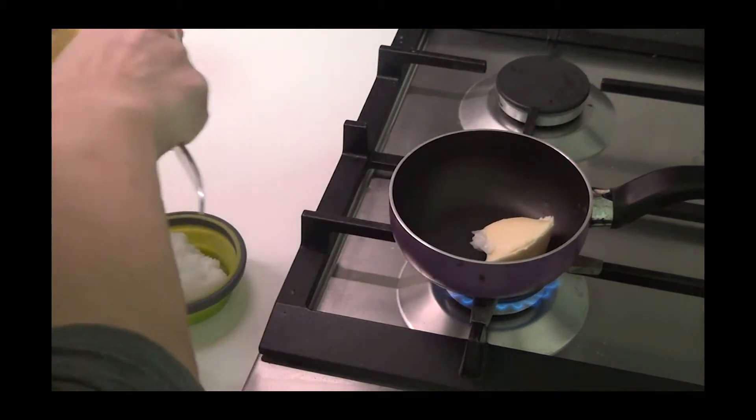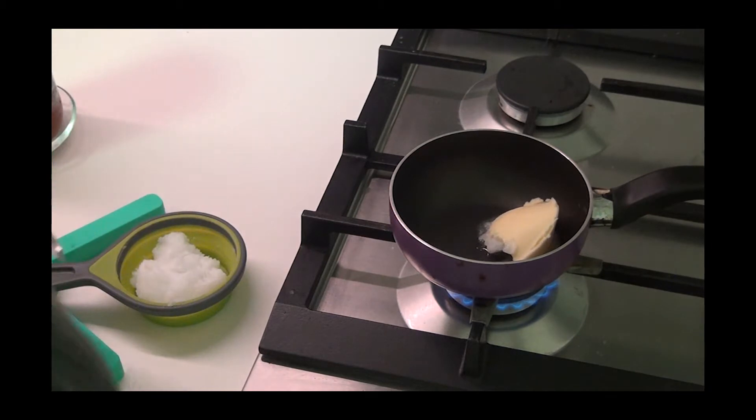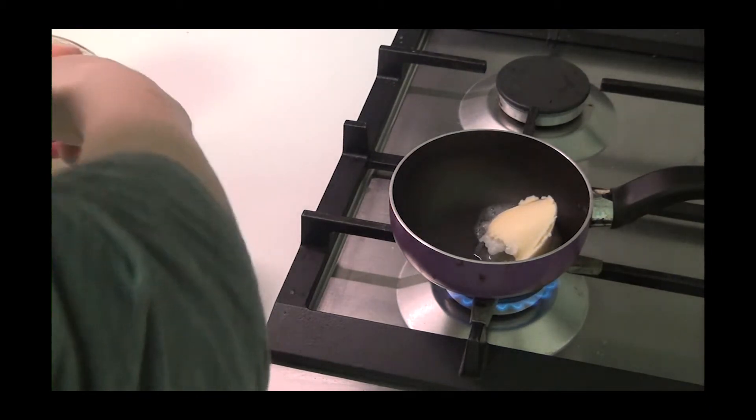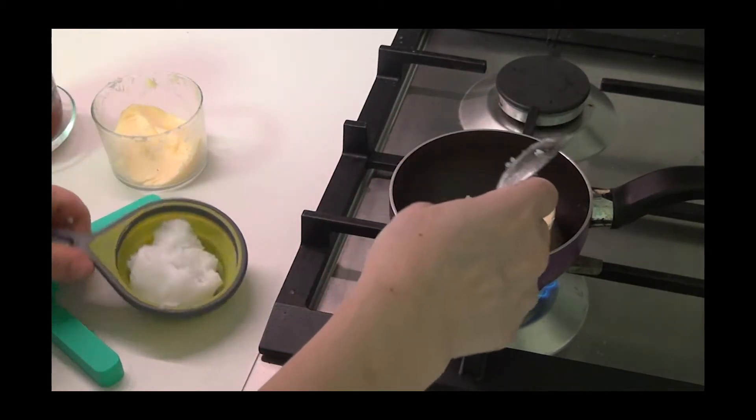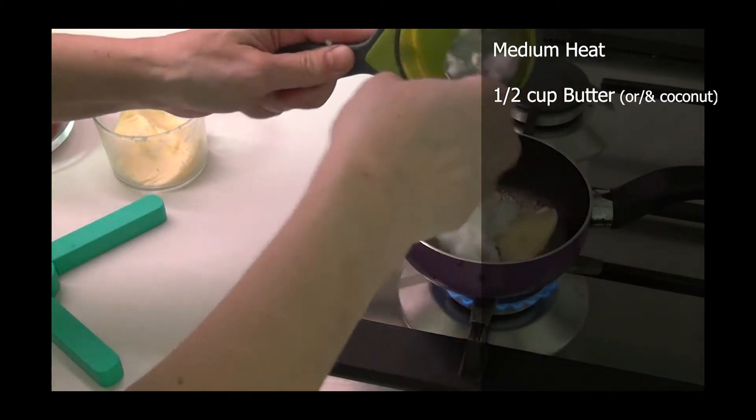On a medium-low heat, put a half cup of butter in a small pan. You can use coconut butter instead. Here I added one-fourth coconut butter and one-fourth regular butter.